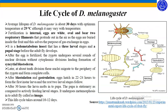The abdomen of males also bears a distinct black patch and a genital apparatus on the ventral surface. The average lifespan of Drosophila melanogaster is about 30 days at an optimum temperature of 29°C, although it may vary with temperature. Fertilization is internal; eggs are white, oval, and bear two respiratory filaments that protrude into the air as the eggs are buried inside fruit, serving the purpose of gas exchange. Since Drosophila is a holometabolous insect, it has three larval stages and a pupal stage before the adult fly develops.